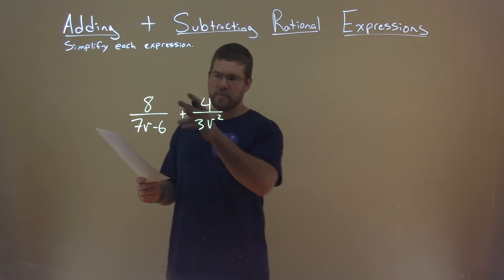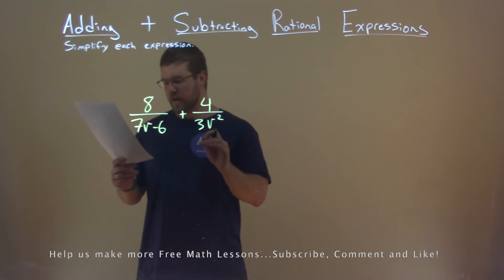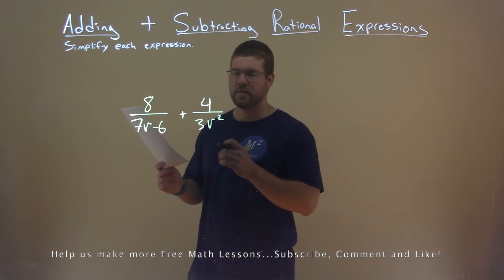We're given this problem right here: 8 divided by 7v minus 6 plus 4 divided by 3v squared, and we need to simplify this expression.